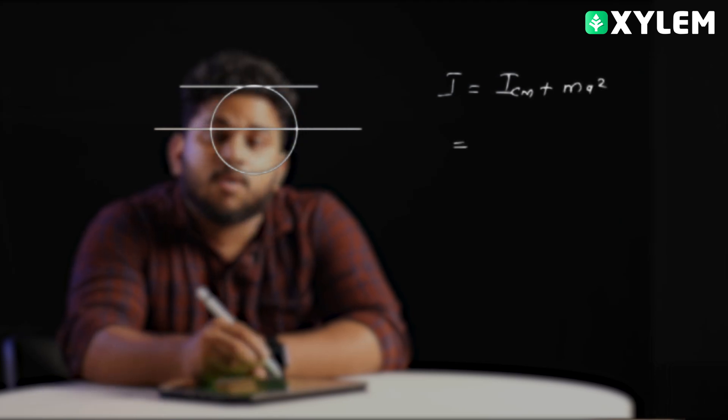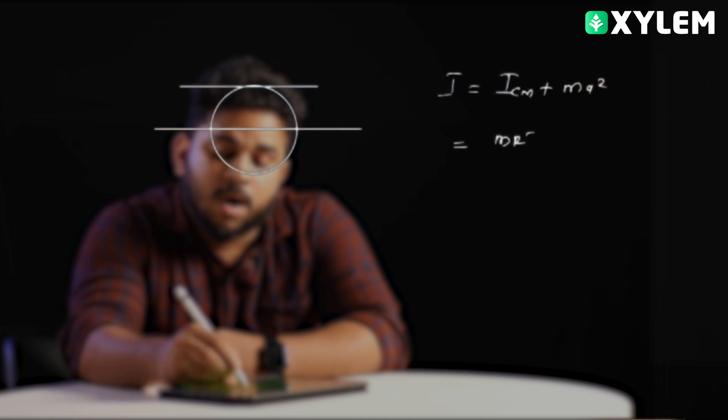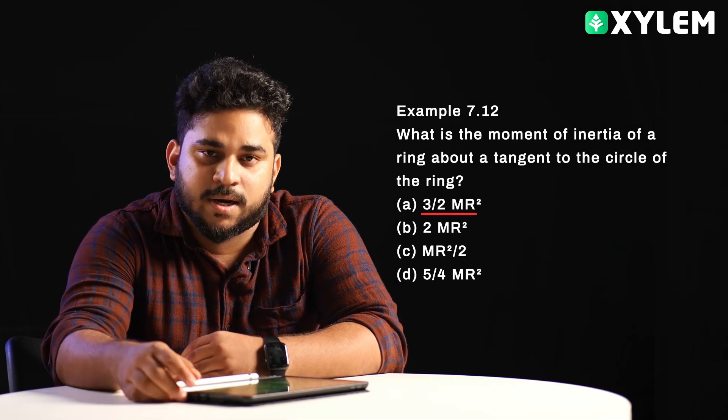I is equal to ICM plus MA squared. Here, the moment of inertia by parallel axis: MR squared by 2 plus MR squared. The answer will be 3 by 2 MR squared. So option A is the right answer.